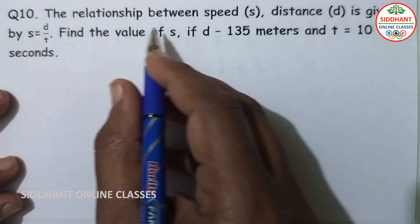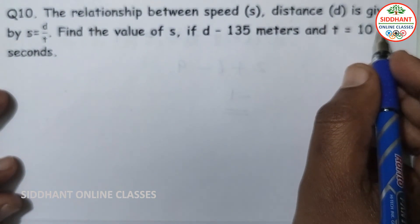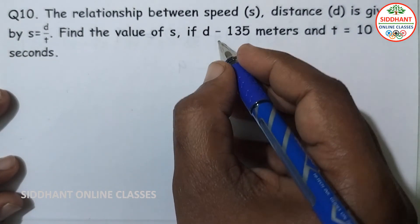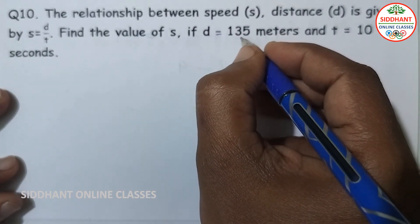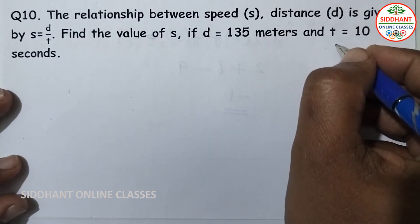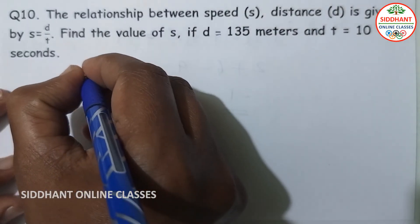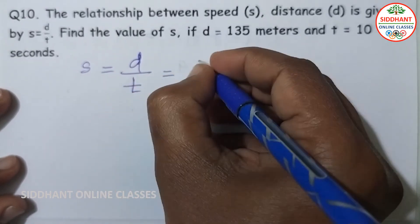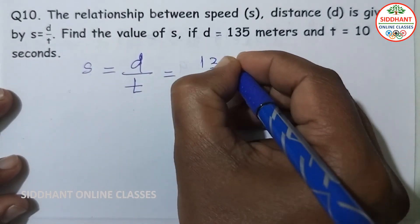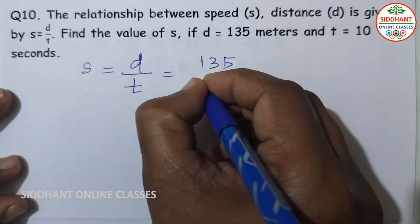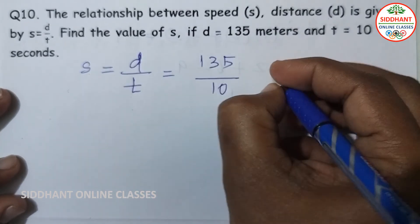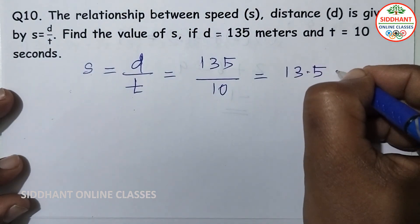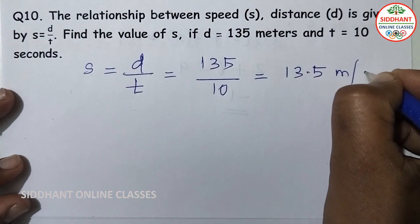Question number 10: the relation between speed and distance is given by S equals D by T. Find the value of S if D equals 135 meters and T equals 10 seconds. So S equals 135 divided by 10, which equals 13.5 meters per second.